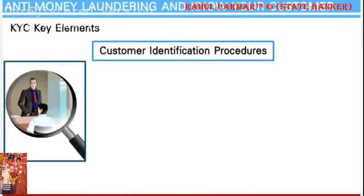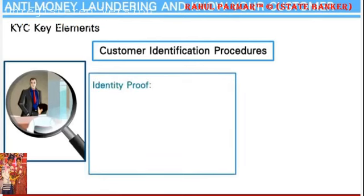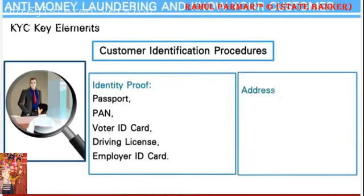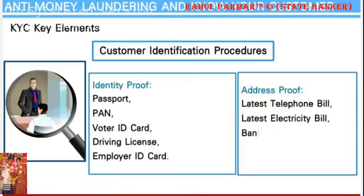Customer Identification Procedures: Customer identification should happen from reliable source documents instead of third-person identification. Acceptable identity proof documents include passport, Permanent Account Number (PAN) card, voter identity card, driving license, or an identity card issued by the employer if acceptable to the bank. For residential address proof, acceptable documents include the latest telephone bill, latest electricity bill, or bank account statement.